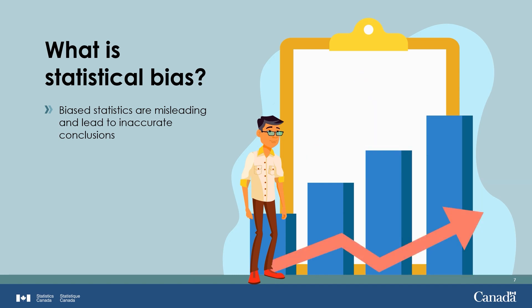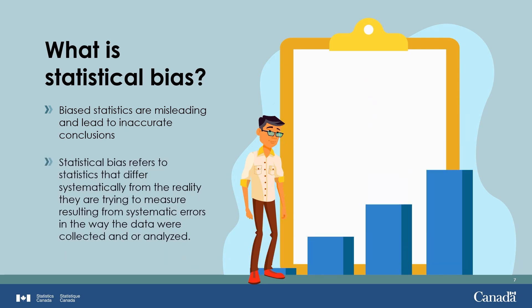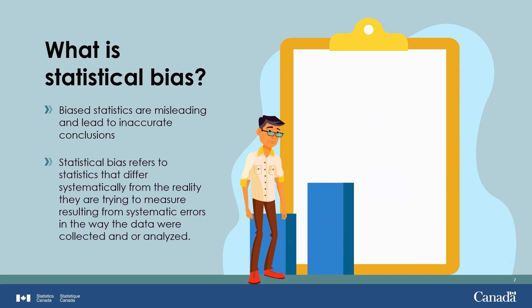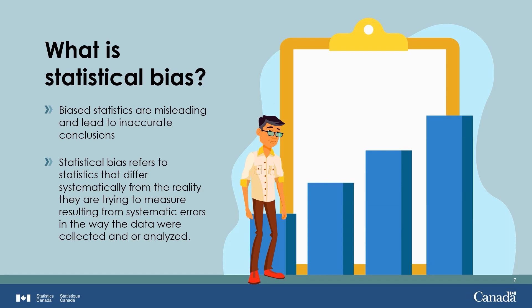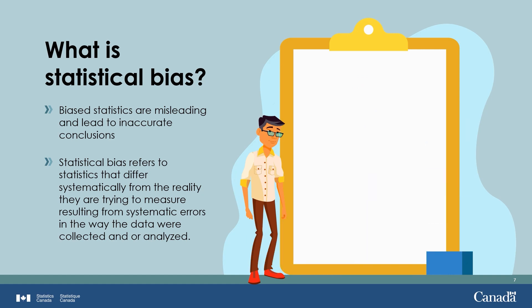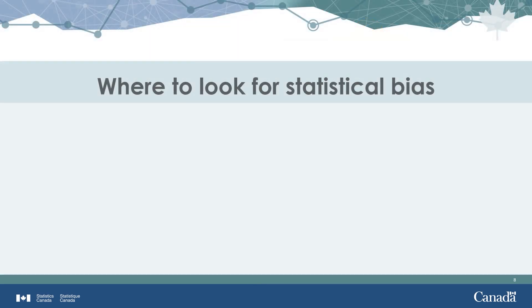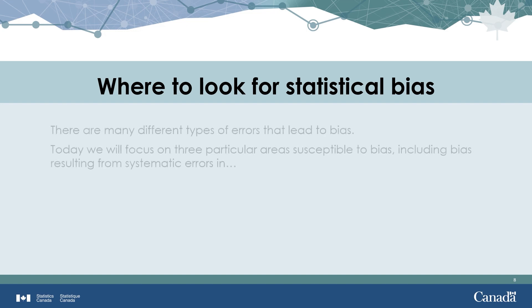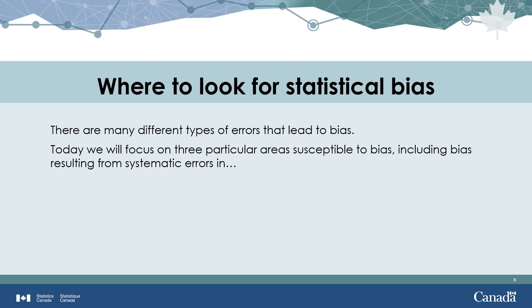Statistical bias means a statistic that differs from the reality it is trying to measure, resulting from systematic errors in the way the data were collected, reported, and/or analyzed. Biased statistics can come from any number of data sources, be it survey data, administrative data, big data, etc. We will focus on three particular areas susceptible to systematic errors: data collection, measurement, and analytics.